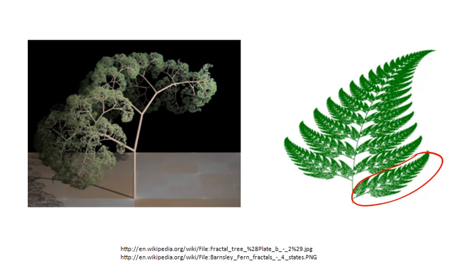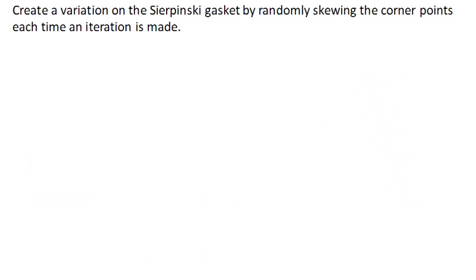Now let's look at a different type. And so we're gonna create a variation on the Sierpinski gasket, but we're gonna add a little bit of randomness in here. So in the normal gasket, remember, we started with a triangle and then we removed the middle portion. But what we're gonna do this time is we're gonna take each of these corner points, and we're going to skew it a little bit.